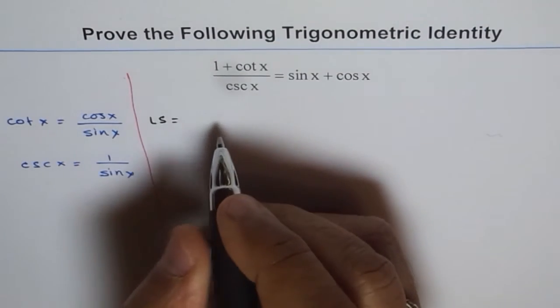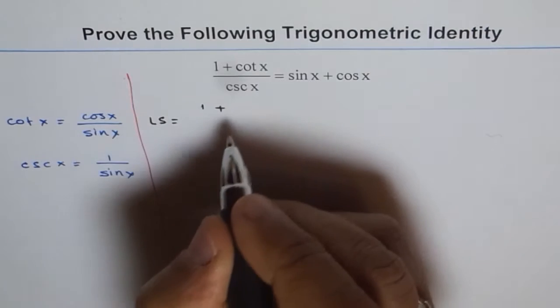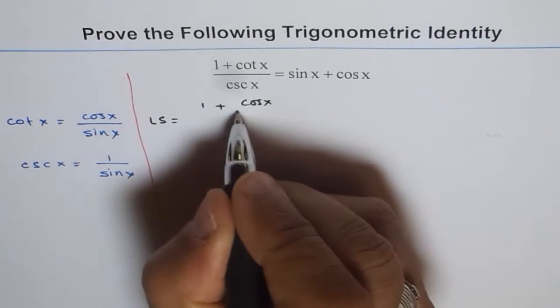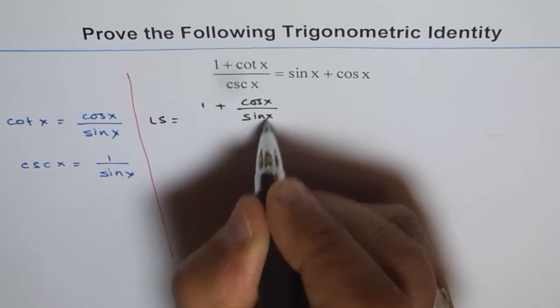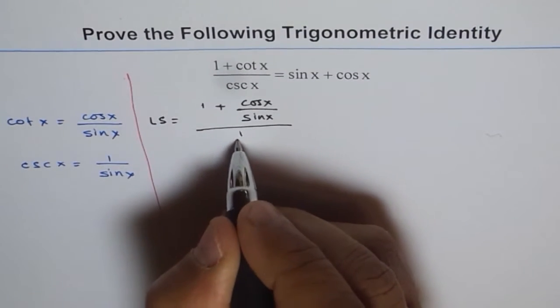The left side is equal to 1 plus, where 1 plus cot x can be written as cos x over sin x, divided by cosecant which is 1 over sin x.